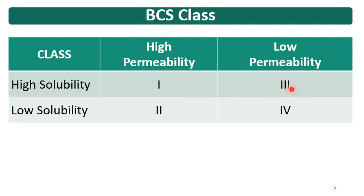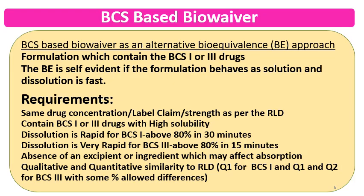For BCS class 3, solubility is high and permeability is low. If you match the dissolution like the innovator and meet the other criteria, the rate-limiting step will be permeability. Permeability is not dependent on the formulation — that's why BCS-based biowaivers are also given to BCS class 3 drugs.